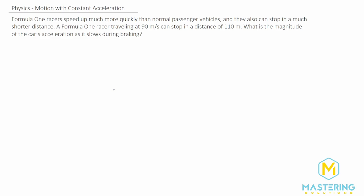So to do that, let's first make a list of all the variables that we know. We know that the initial velocity in this case is 90 meters per second. The final velocity will be zero because it's stopping. And they tell us that the distance that it stops in is 110 meters.